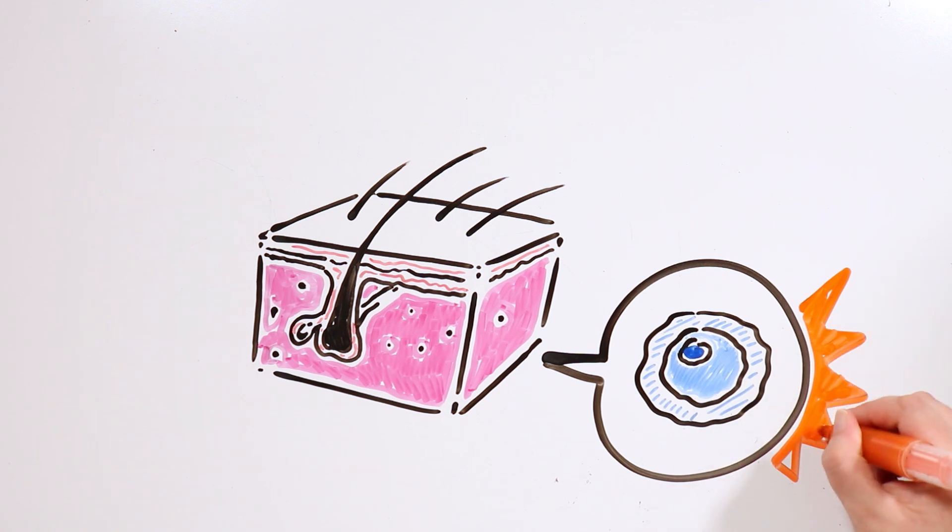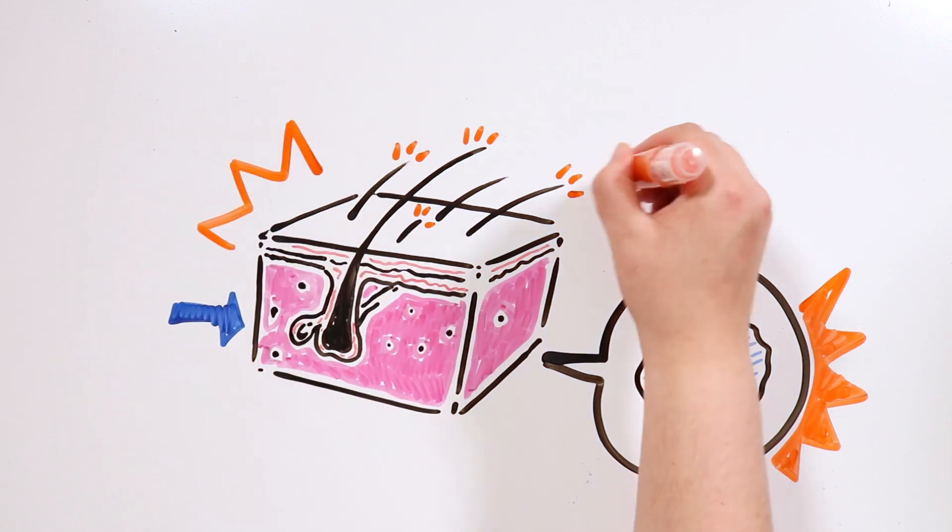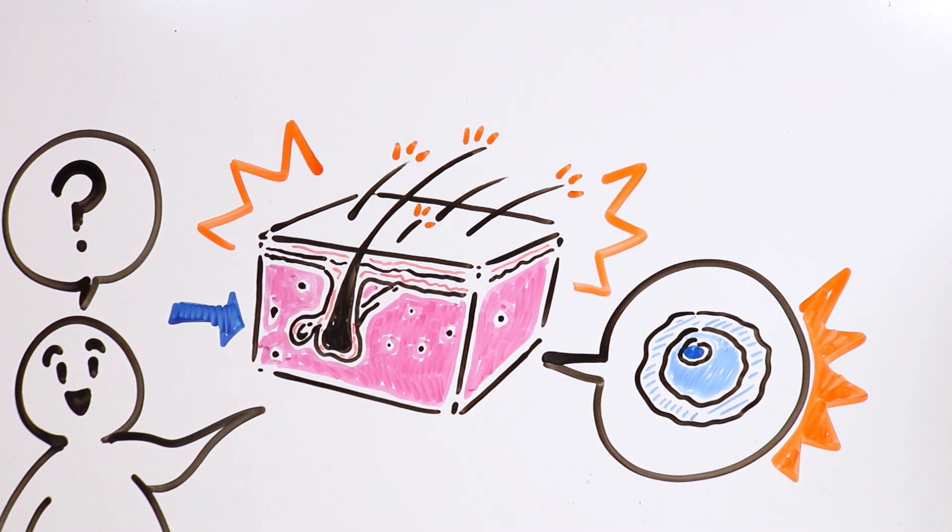In other words, each hair follicle is independent from the rest, and thus each hair we have could be in a different stage of the growth cycle. Interesting, right?